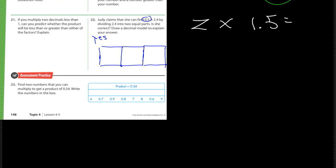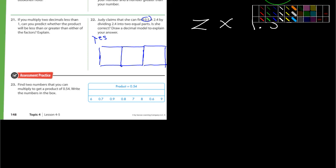And find two numbers that you can multiply to get a product of 0.54. Write the numbers in the box. So they're giving you some numbers to choose from. These numbers right here. You can choose from those to get a product, an answer of 0.54. I'm going to end the video here.